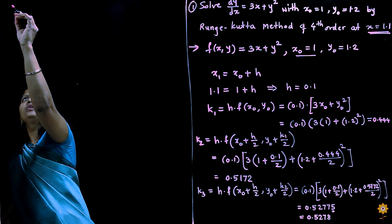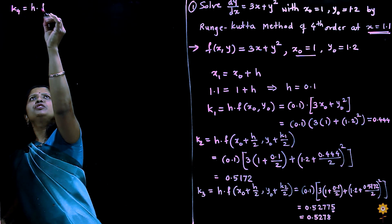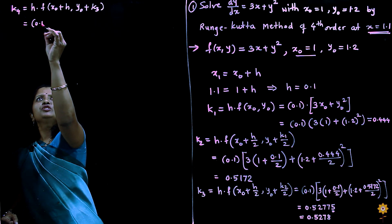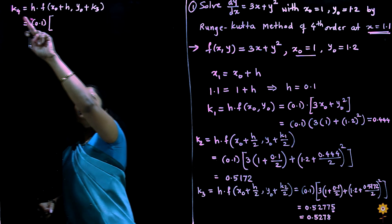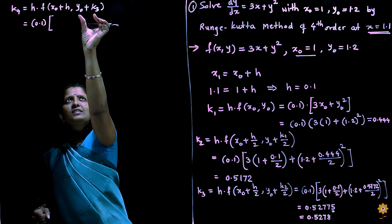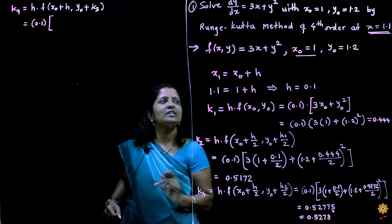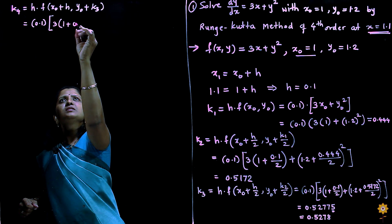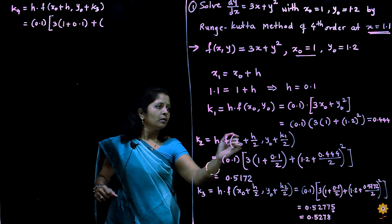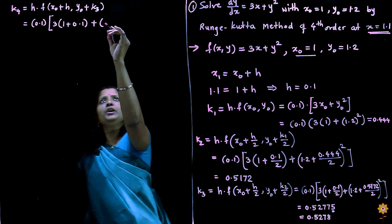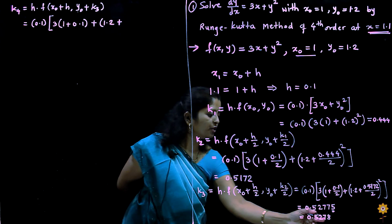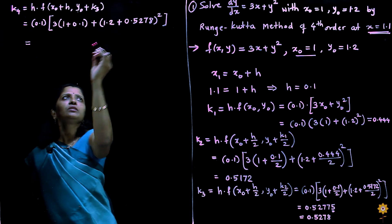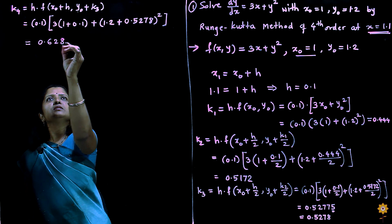Now find k4. The formula is h into f of x0 plus h, y0 plus k3. Substituting: h is 0.1, x is x0 plus h and y is y0 plus k3. So it is 0.1 into 3 into (1 plus 0.1) plus (1.2 plus 0.5278) whole squared. Calculating this expression gives k4 equal to 0.6285.